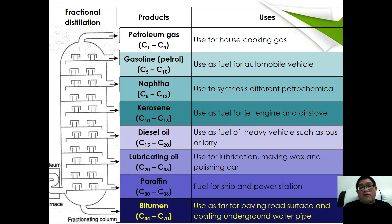In the fractional distillation column, as we studied during phase equilibria in semester one, the one going up higher will be the one with lower molecular mass. The first portion, from C1 to C4, is petroleum gas, usually used for house cooking gas. The second portion, between C5 and C10, is gasoline used as fuel for automobile vehicles. The third column is naphtha, used to synthesize different petrochemicals.